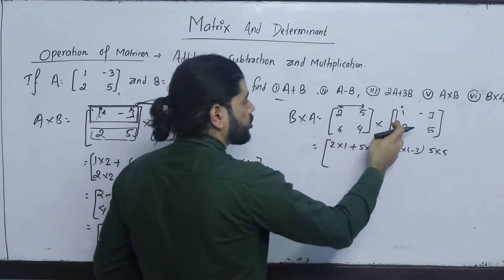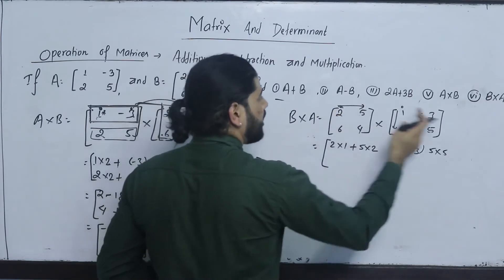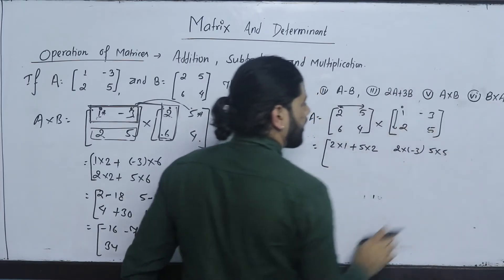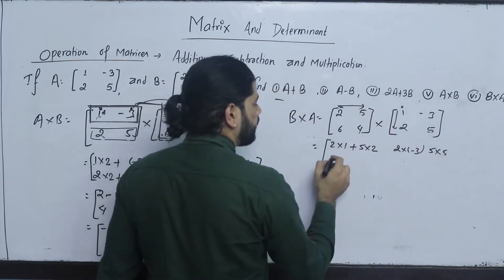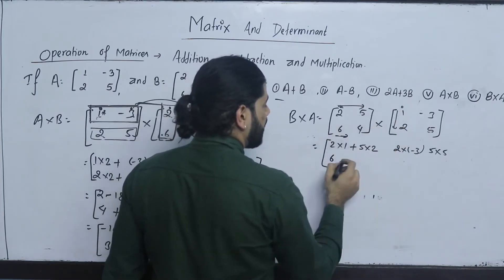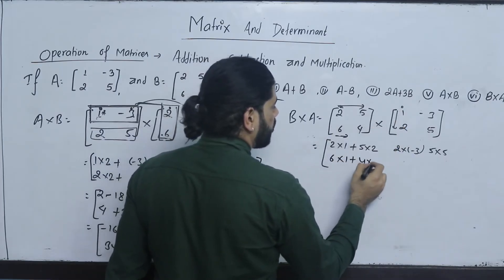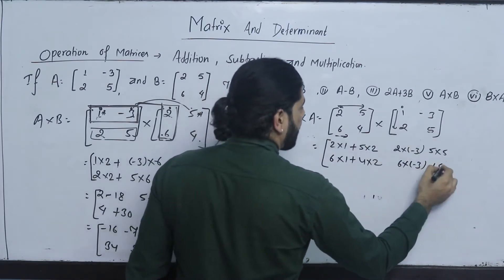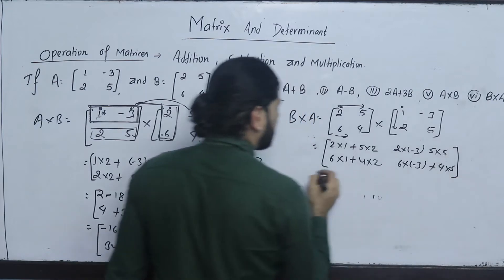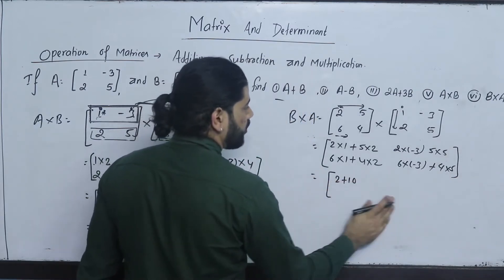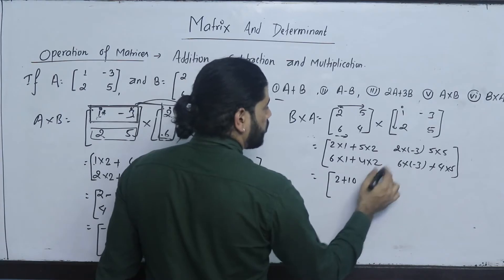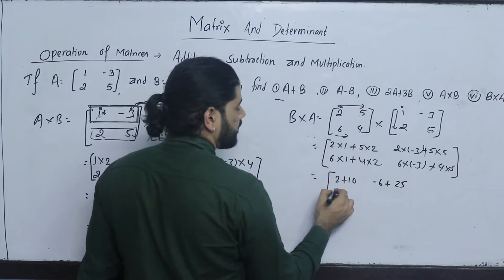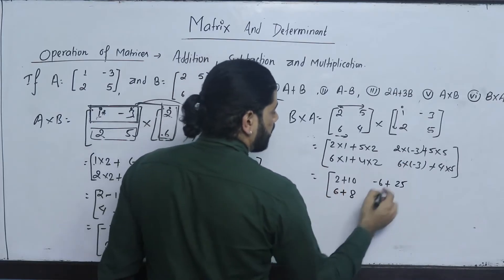First row, first column. First row, second column. First row, third column. Second row, first column. So: 2 plus 10 gives 12, minus 6 plus 25. Then 6 plus 8 gives 14, minus 18 plus 20.